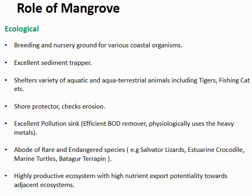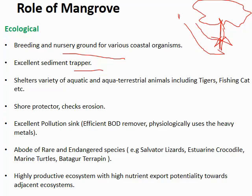The role of mangrove can be divided into ecological, economic, and social. For ecological role: it is a breeding and feeding ground for huge numbers of coastal organisms, from fish to crustaceans. It is also an excellent sediment trapper — lots of runoff and sediment from rivers are trapped by the mangrove roots. Heavy metals are also absorbed by the microbes, helping clean pollution from the water. It is a shelter for huge aquatic resources.